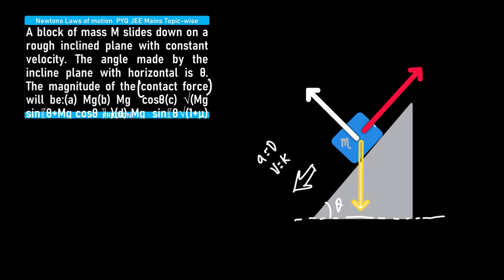since the body is sliding downwards and the net direction of motion is downwards, the three forces acting on the block are: one, the weight of the body acting towards the earth; second, the normal reaction on the block due to the inclined surface; and third, the force of friction. Since it is sliding down, there is relative motion, therefore